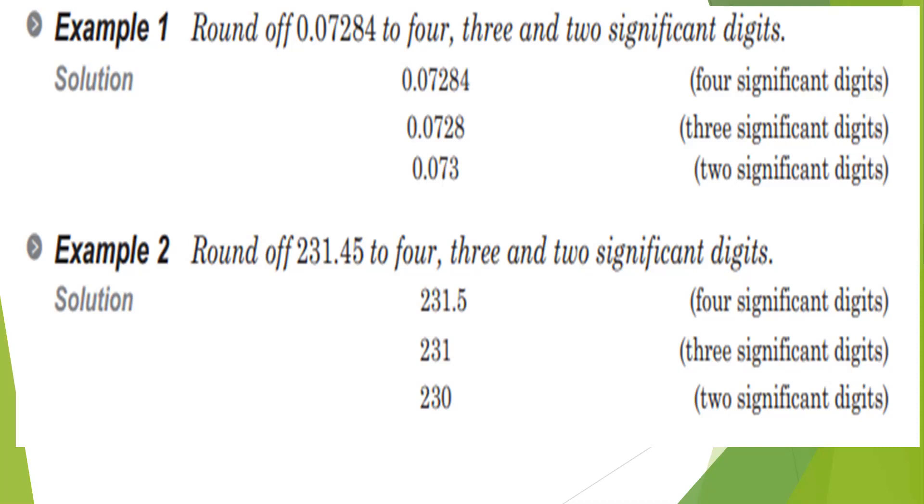When the digit to omit is 5, two options exist. If the preceding digit is even, leave or add 1 to it. For 231.45 in 3 significant figures, you can omit 4 to get 231. For 2 significant figures, instead of getting 23, we need to round off and keep the number nearer. We keep 0 in that place to get 230. If after decimal, we can omit. If no decimal, we need to put 0.